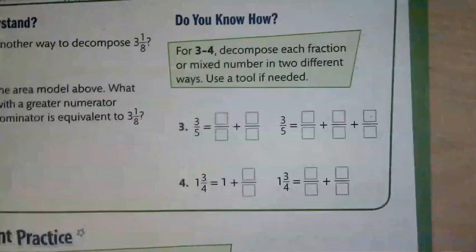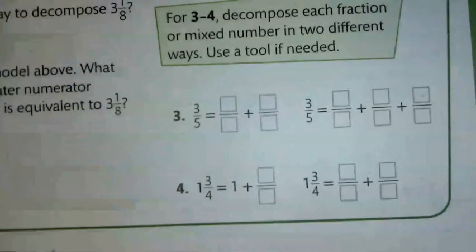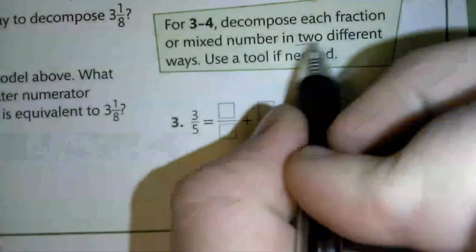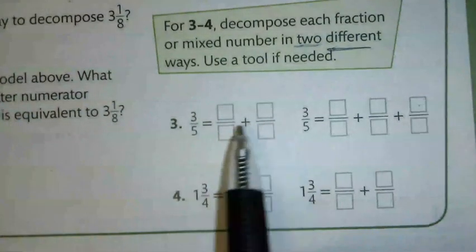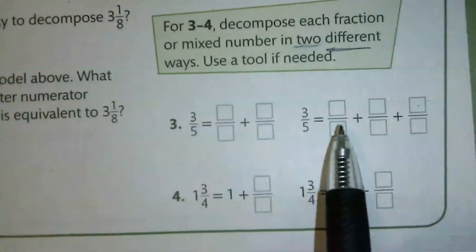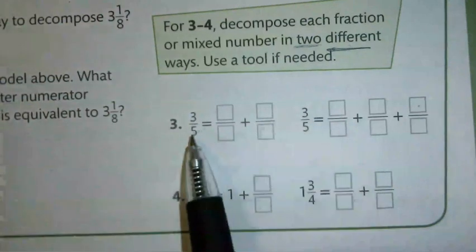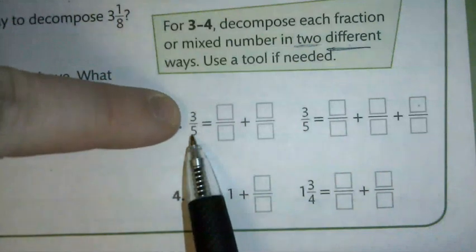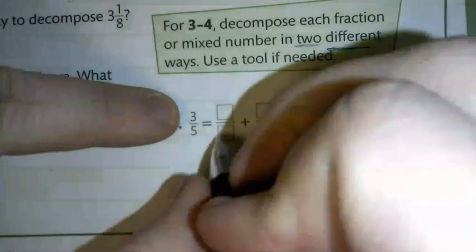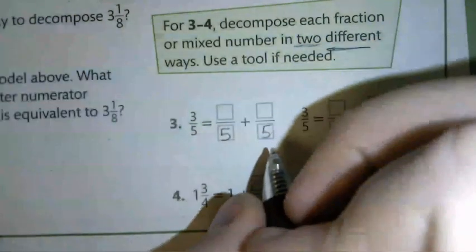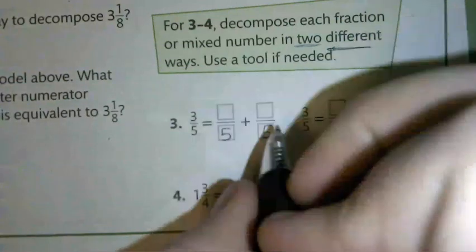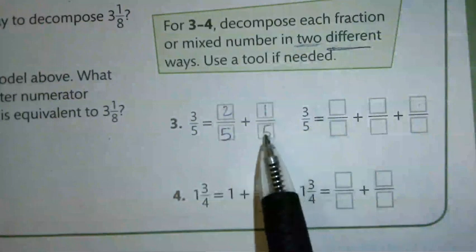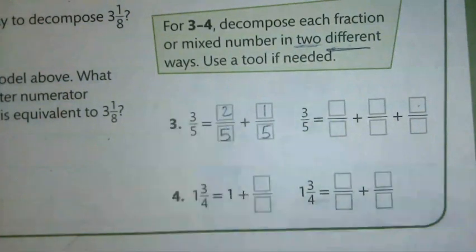For number 3 it says to decompose each fraction or mixed number in two different ways. Here I'm going to add just two fractions together to get the original, and then over here I'm going to add three fractions together. When we add fractions the denominator stays the same, so I'll put my denominators in first. Then I look at my numerator: what plus what gives me 3? How about 1 plus 2? So 1/5 plus 2/5 equals 3/5.